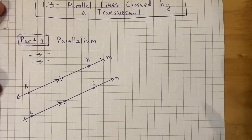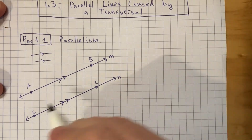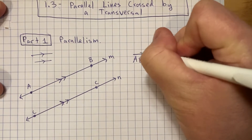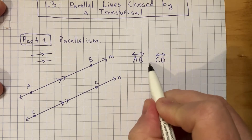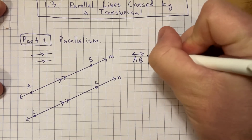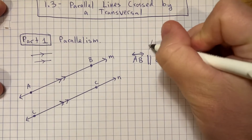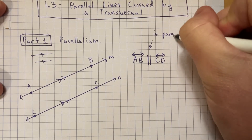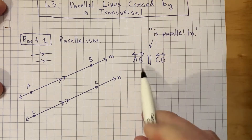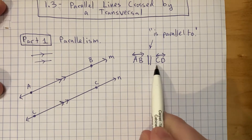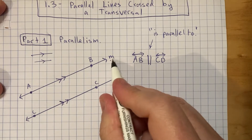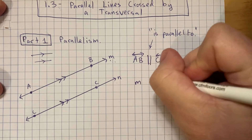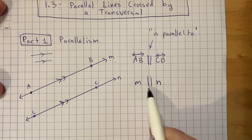If you want to write a sentence saying two lines are parallel, you can say line AB and line CD. There's also a symbol that shows they're parallel — it looks like two parallel lines — and that symbol means 'is parallel to.' So this is a shorthand way of saying line AB is parallel to line CD. Notice also that I put two lowercase letters here. This is a different way of labeling lines — we could call them m and n. If I use lowercase letters, I can do that with lines. So I could also say that line m is parallel to line n.